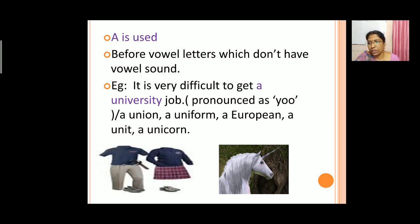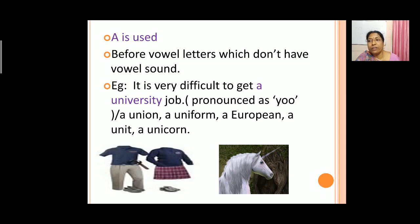For example: it is very difficult to get a university job. Here the word 'university' starts with the letter 'u', but the sound is 'yu', which is not a vowel sound. So there we use 'a'. More examples: a union, a uniform, a European, a unit, a unicorn. Here 'European' starts with 'e', which is a vowel, but the sound is 'yu'. So for letters which are vowels but are pronounced as 'yu', we use 'a'.